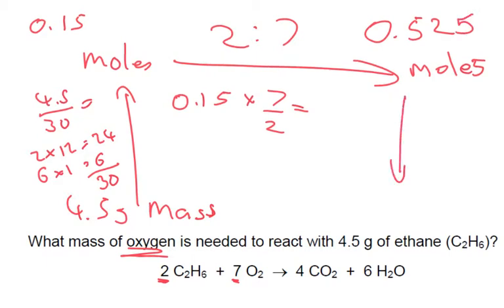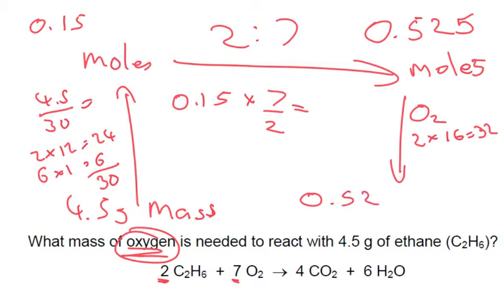Finally, back down we go. We're looking for oxygen — O₂ — which is 2 times 16, which is 32. Then the mass is the number of moles times the molar mass: 0.525 times 32, and we get our final number of 16.8 grams.